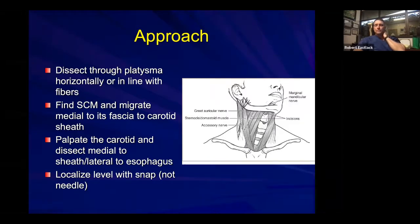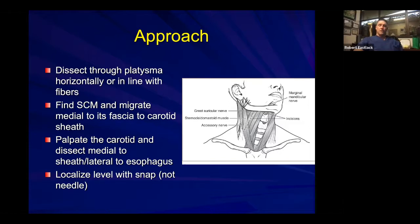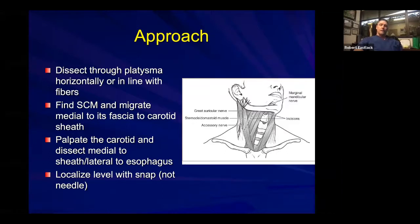Part of the dissection is finding the sternocleidomastoid, which is typically quite easy to see through the platysma. Lifting up your retractor a little will help define the pathway medial to the SCM. Start exploiting that with your Metzenbaum scissors or dissecting tool — or your finger if the tissue is soft and supple. Scissors are typically needed to separate the fascial tissues and spread through them between the medial structures — trachea and esophagus — and the sternocleidomastoid. Palpate for your carotid sheath by palpating the carotid, which should be lateralized to your trajectory.